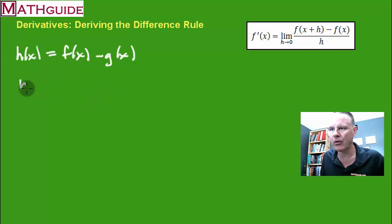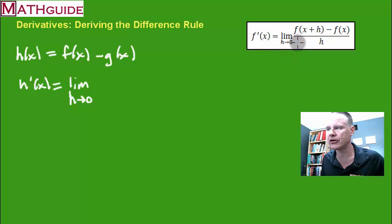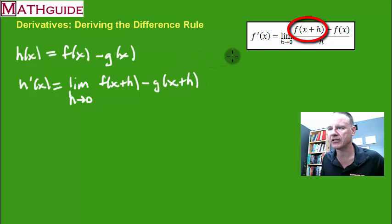So if I want to figure out what the derivative is of this function, this difference of functions, I want to use that definition that we have up there. The definition says we're going to take the limit as h goes to zero, and we're going to replace first the x's with x plus h. So I'm going to go through this and replace that x with x plus h. I've got to do the same thing over here. So I'm going to replace that x with x plus h.